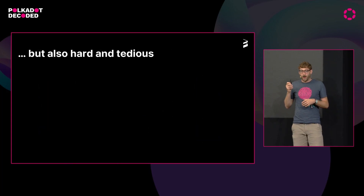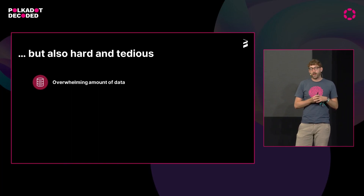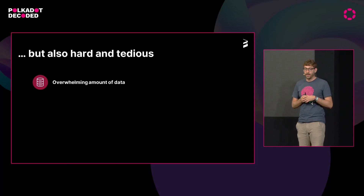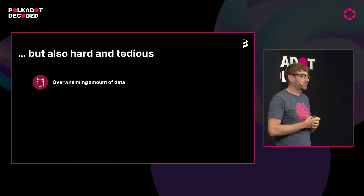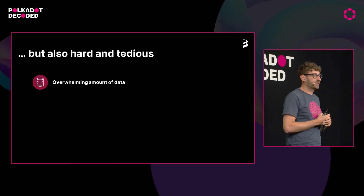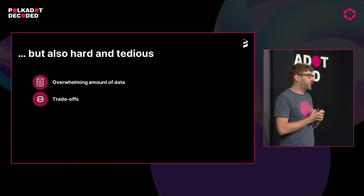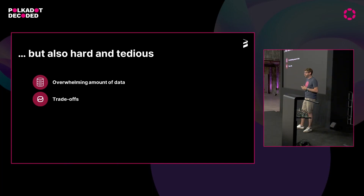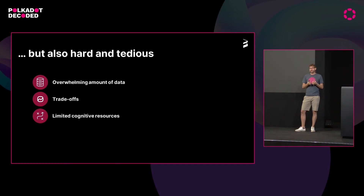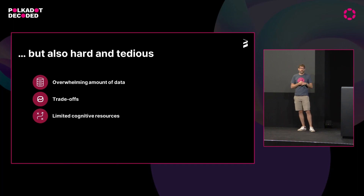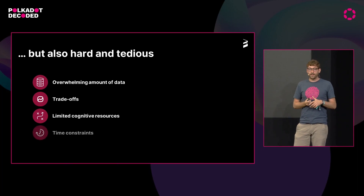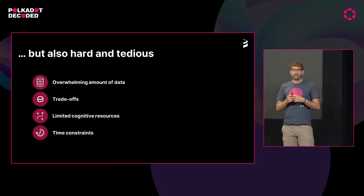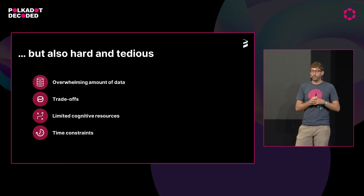Finding good validators is actually crucial, but it's also hard and tedious because we have an overwhelming amount of data. We have right now 297 validators on Polkadot with around 750 waiting, and 1,000 validators on Kusama with another 1,000 waiting, and this number just increases as we scale the network. This task is quite complex because there are a lot of different trade-offs between security, decentralization, and performance. On top of this, humans only have limited cognitive resources, so even if you want to spend a lot of time, because of the overwhelming amount of data and these different trade-offs, it's very hard to make a good selection. We cannot expect that nominators are constantly trying to find the best validators and updating their nominations.